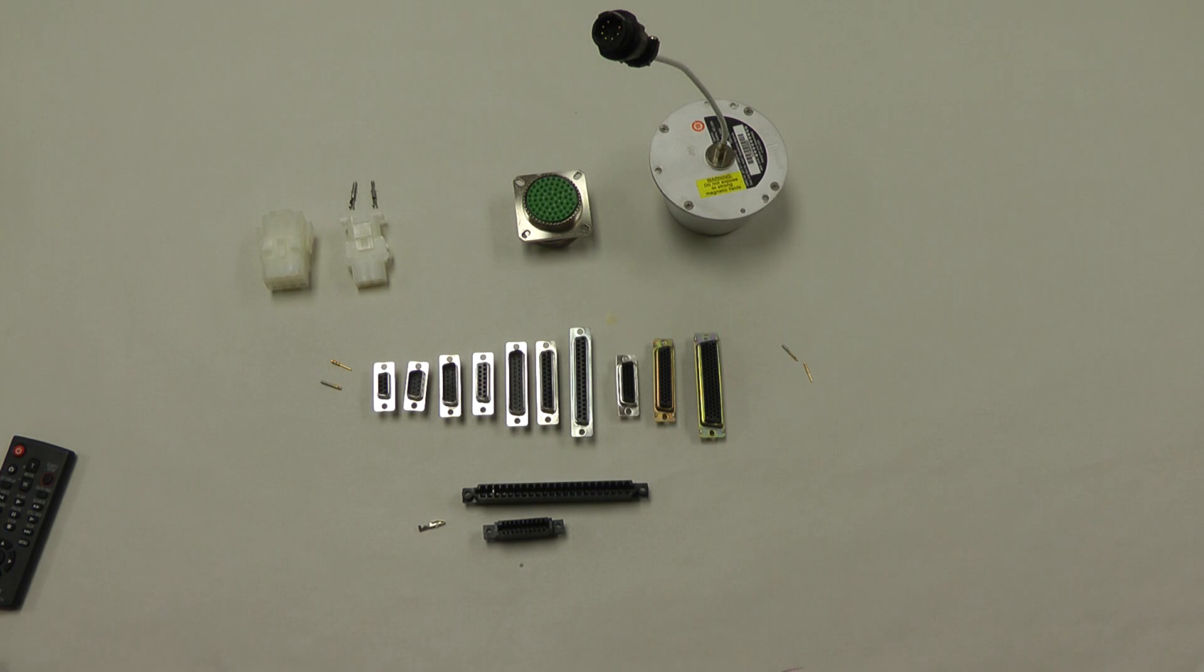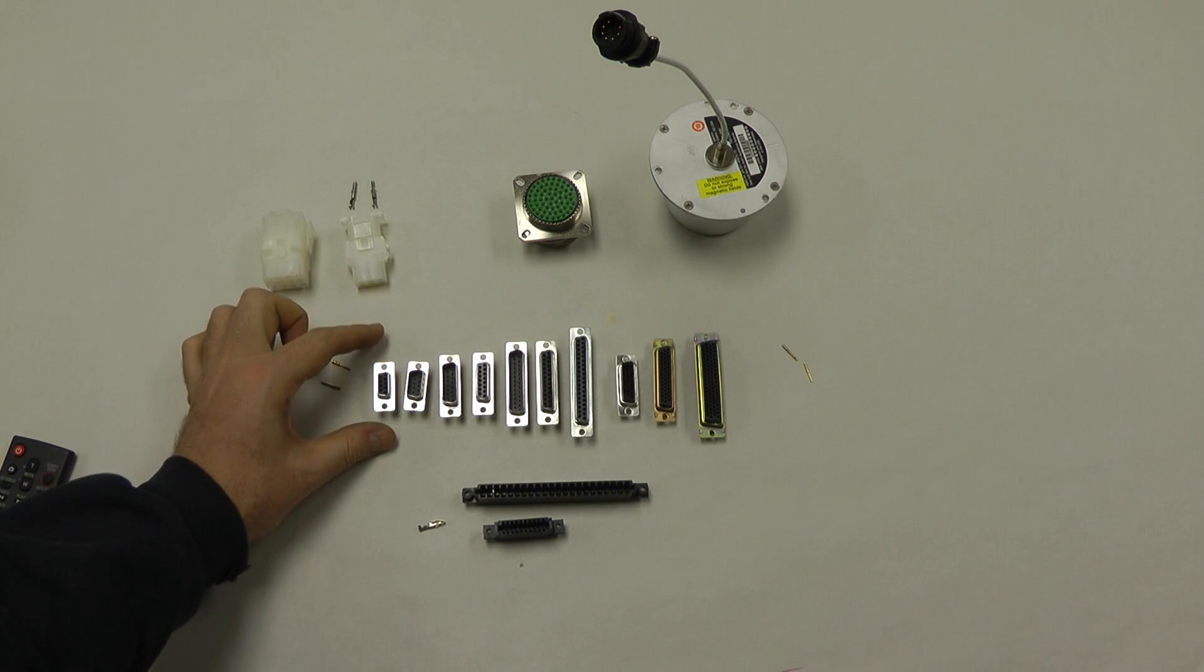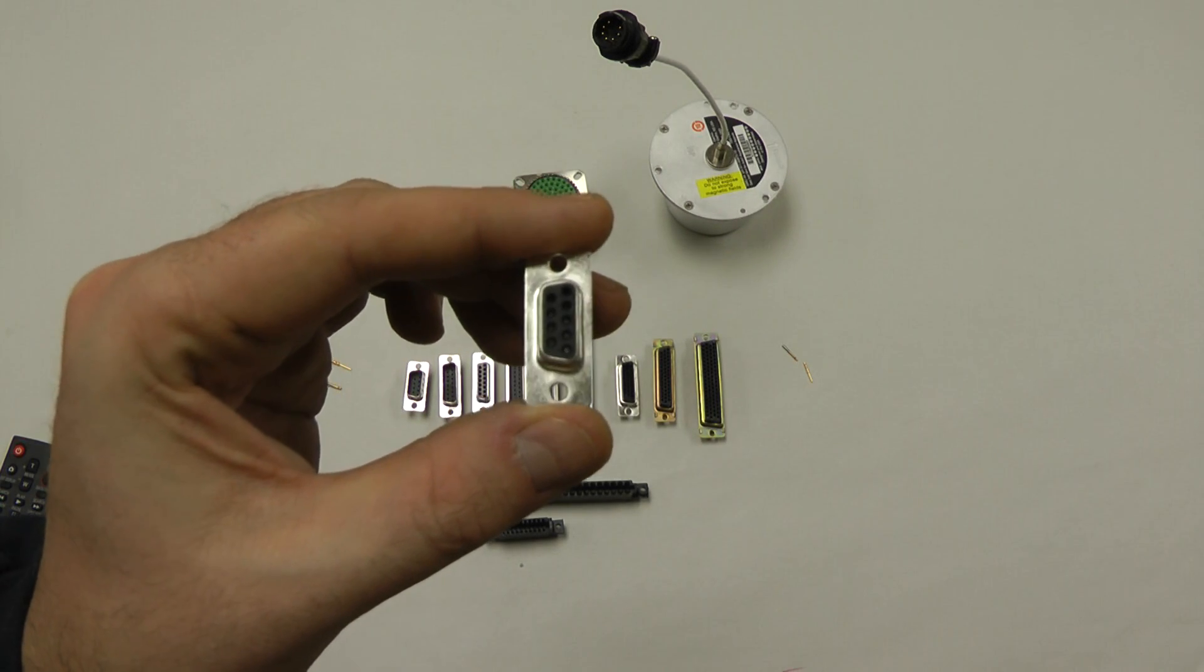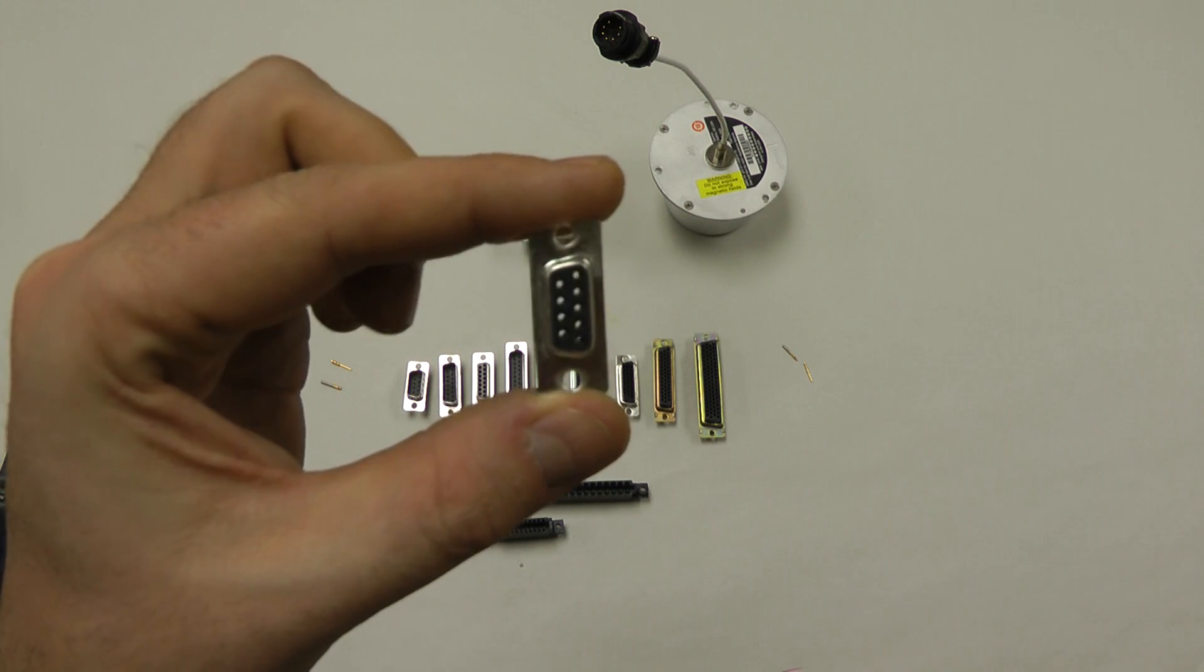Probably the most common that you'll see all the time is what we call D connectors or D-sub or DB connectors. The reason they're called that is in general they're in the shape of a D if you look at it here. You can see generally it kind of has an oblong D shape.